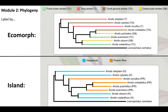In Module 2, you had to label the tree in two different ways: by ecomorph and by island. With the ecomorph labeling, we took all trunk-crown anoles and labeled them green, twig anoles red, trunk-ground anoles brown, and grass-bush anoles yellow. What we see is that all these body types — these ecomorphs — appear to have evolved independently, because the yellow grass-bush anoles don't share a common ancestor that was itself a grass-bush anole. So based on this graph, the ecomorphs seem to have evolved independently each time, because they're not grouped together.